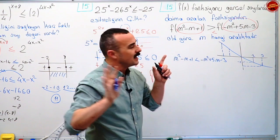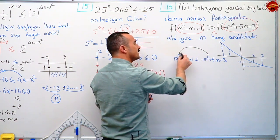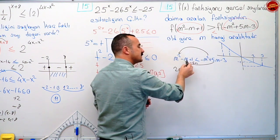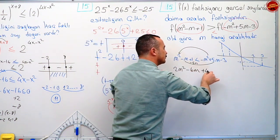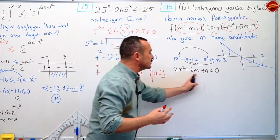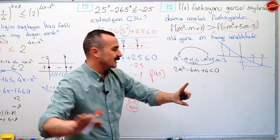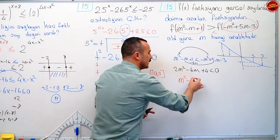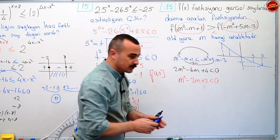Bu yorumu yapamayan bu soruyu çözemez. Eşitsizlikle alakalı kısmı şimdi yapıyorum. Hepsini bir tarafa topluyorum: eksi m kare artı m kare iki m kare; artı beş m eksi beş m eksi altı m; bir eksi m eksi altı m; eksi üç bu tarafa artı üç. Artı dört küçüktür sıfır. Bitti. Bu eşitsizliği çarpandan ayıracağım. Hepsini ikiye bölebilirsin. Ben böldüm.